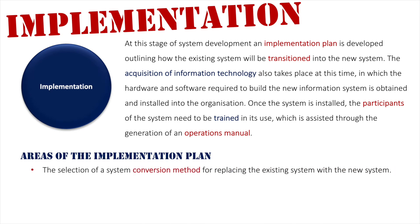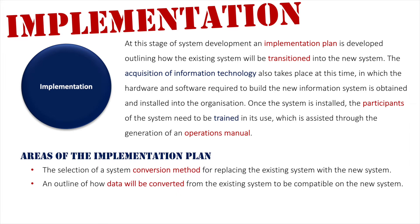The first key point is the conversion method for replacing the existing system with the new system. The second is how data will be converted from the existing system so it is compatible with the new system. For example, if all your data was stored in spreadsheet format, you can't simply cut those records and put them into a database file. You need to produce a CSV — comma separated values — file first. This removes the tabular format, separates everything with commas into a raw text file, which can then be imported into a database.